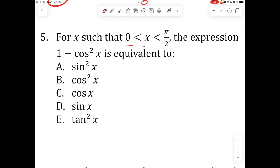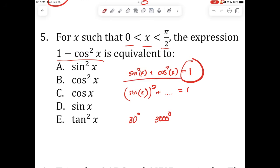Next question. For x such that 0 is less than x is less than pi over 2, the expression 1 minus cosine squared x is equal to which of the following? So one thing you need to keep in mind, this is based off of a very simple rule. It is a property of sines and cosines. And that is sine squared x plus cosine squared of that same x is equal to 1. You can plug in any number for x. You can plug in 30 degrees, 30,000 degrees, negative 5, you can plug in 0. It's going to give you 1 every single time if you're squaring both the sine and the cosine.